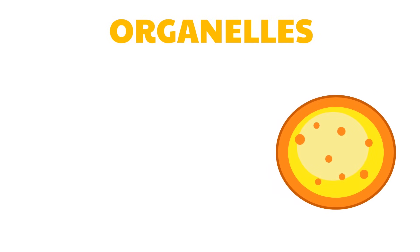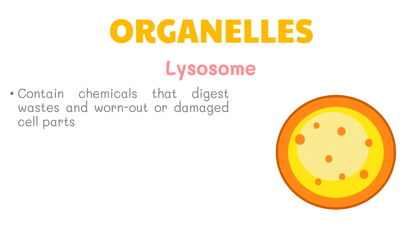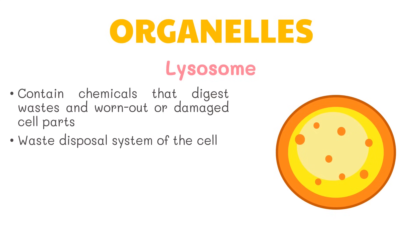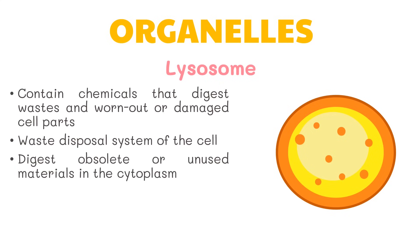Cells also produce waste. In the cytoplasm, structures called lysosomes contain chemicals that digest waste and worn-out or damaged cell parts. Lysosomes act as the waste disposal system of the cell by digesting obsolete or unused materials in the cytoplasm. For this reason, lysosomes are also called the suicidal bags of the cell.